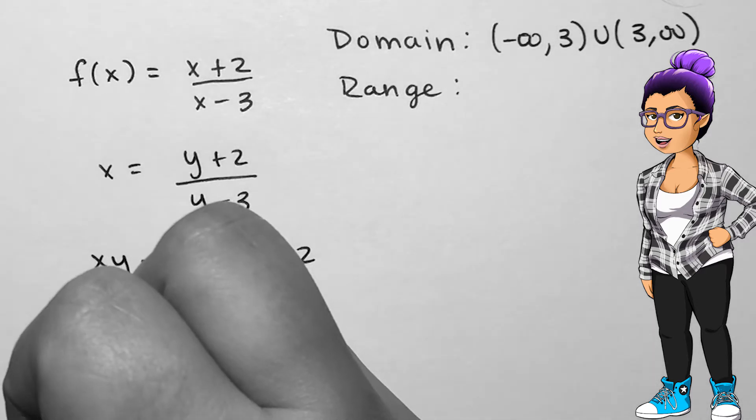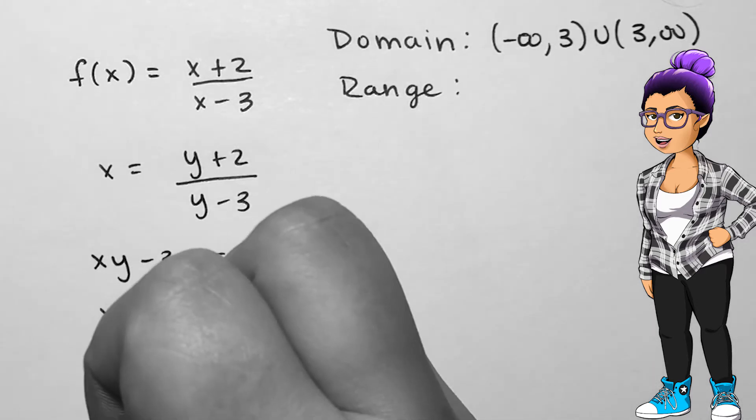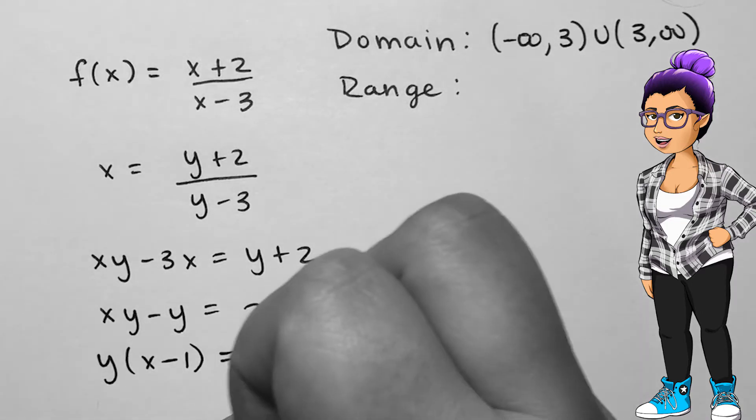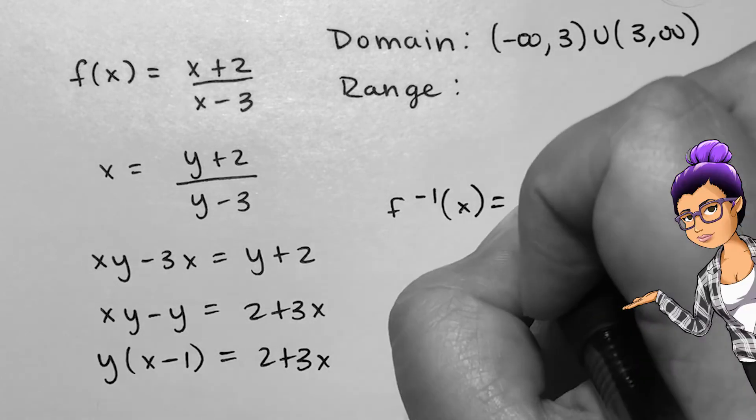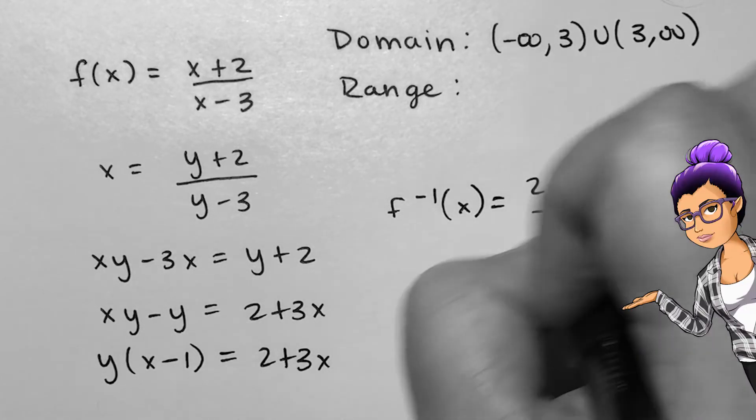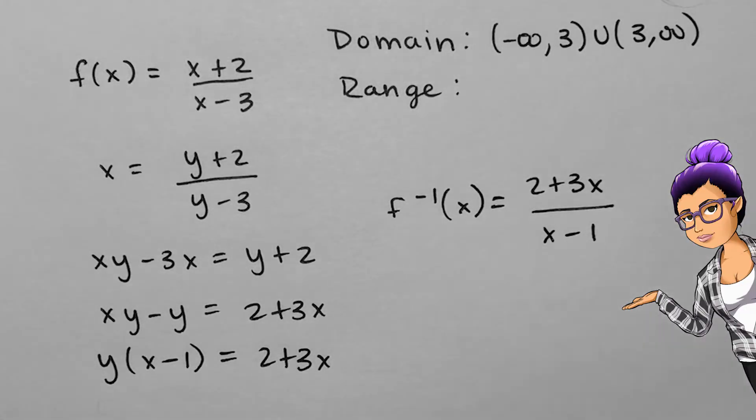Using the same techniques from the finding an inverse video, I replace the function notation with a variable y, switch the inputs and outputs, then solve for y. After this, I see that f inverse of x is 2 plus 3x all over x minus 1.